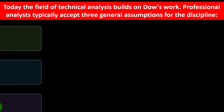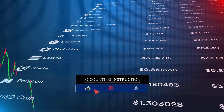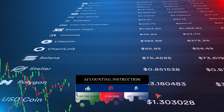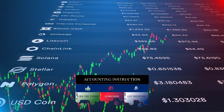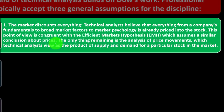Today, the field of technical analysis builds on Dow's work. Professional analysts typically accept three general assumptions. First, the market discounts everything — technical analysts believe that everything from a company's fundamentals to broad market factors to market psychology is already priced in. This is congruent with the Efficient Markets Hypothesis (EMH), which assumes a similar conclusion about prices. The price is assumed to be efficient, though it may not be perfectly efficient at any given time.